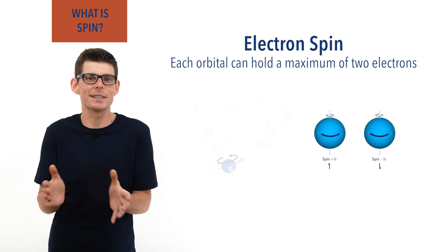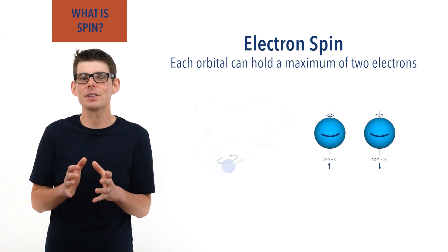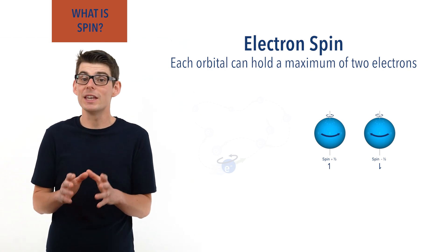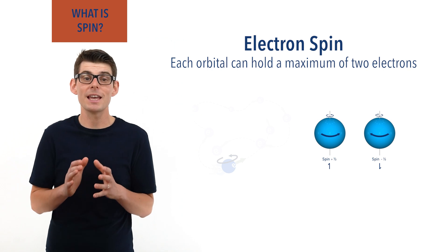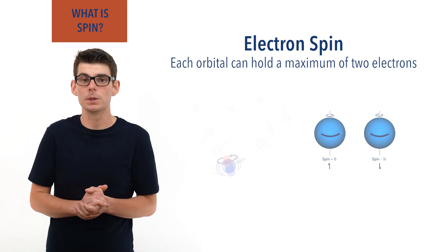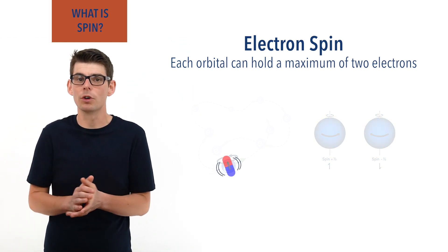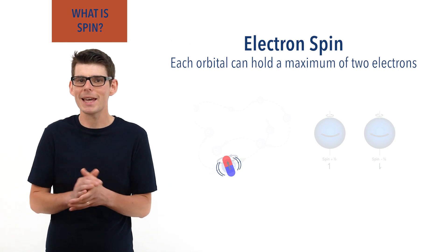Without getting too physics-y here, because electrons have a charge, as they spin they generate a very weak magnetic field. You can kind of think of a spinning electron as being like a tiny bar magnet.